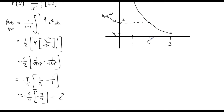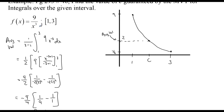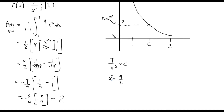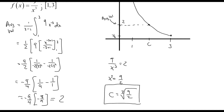They want us to find the value of c — that's easy. We want to know what value of x makes f(x) equal to 2. So 9/x³ = 2, which means x³ = 9/2. Therefore c = the cube root of 9/2. You can simplify that further if needed.